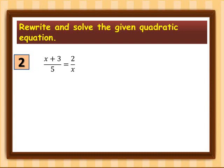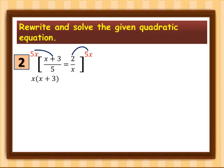This time we are going to multiply both sides by 5x. Distributing, this becomes x times (x + 3) on the left side, equal to 10 on the right. Distributing x inside the parenthesis gives us x squared plus 3x is equal to 10.